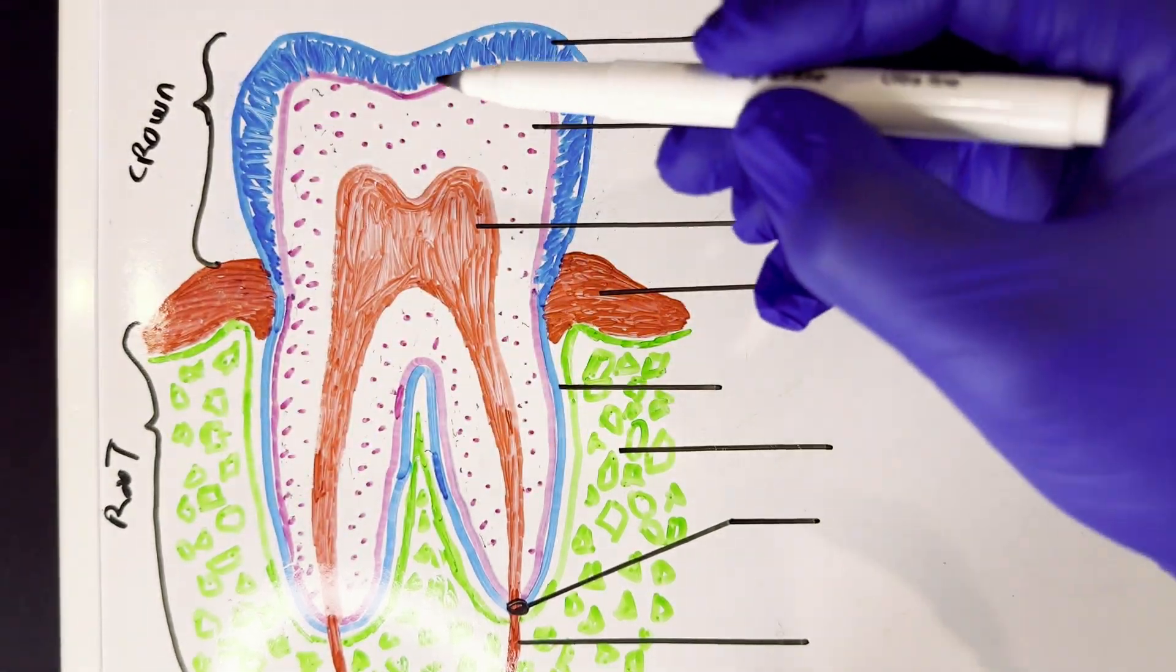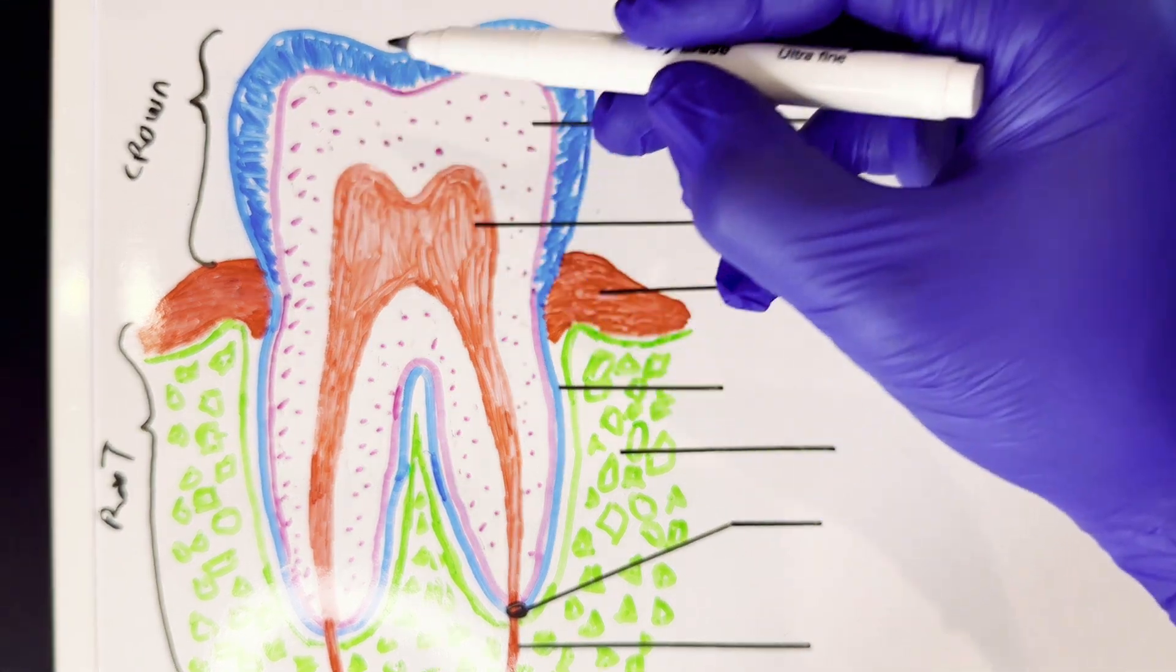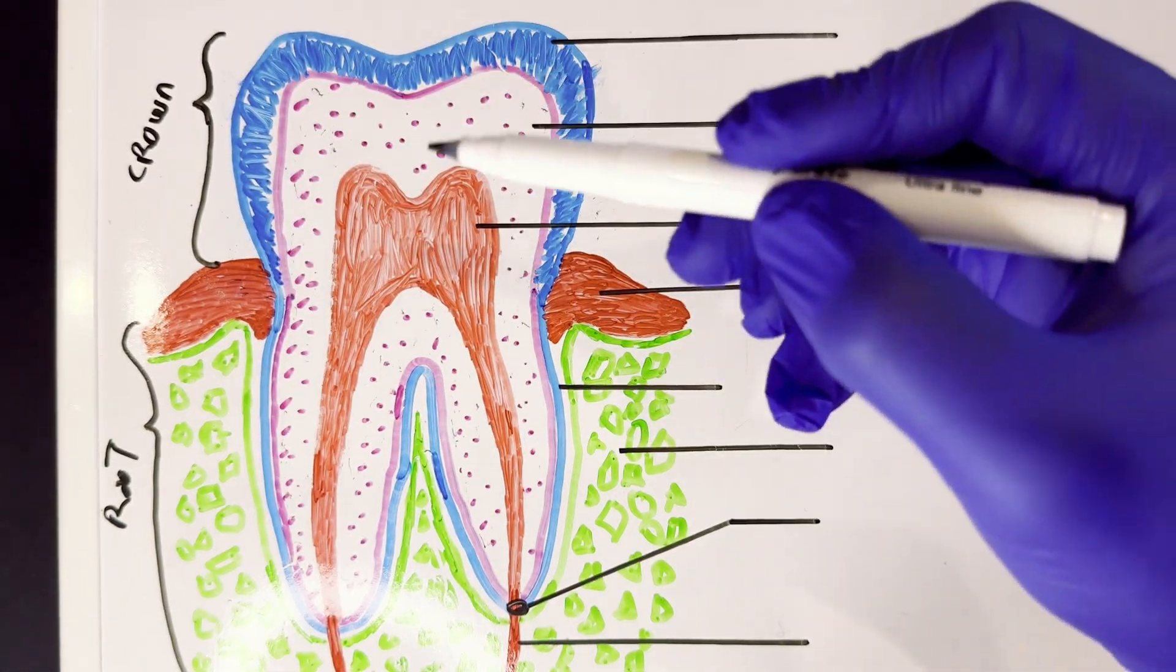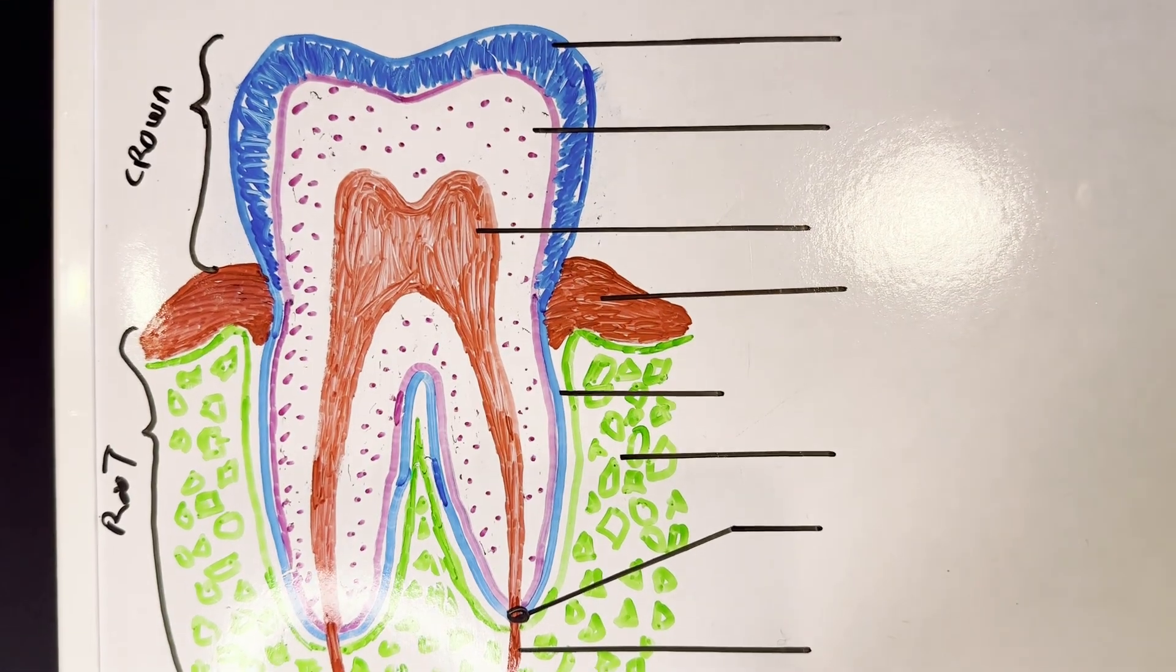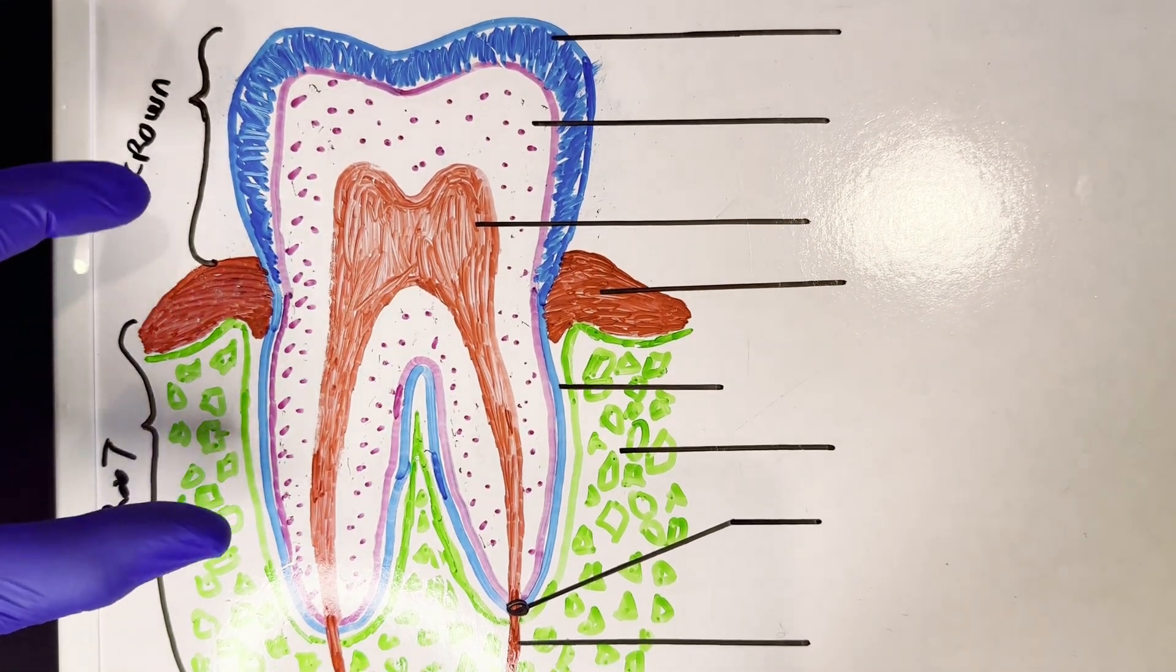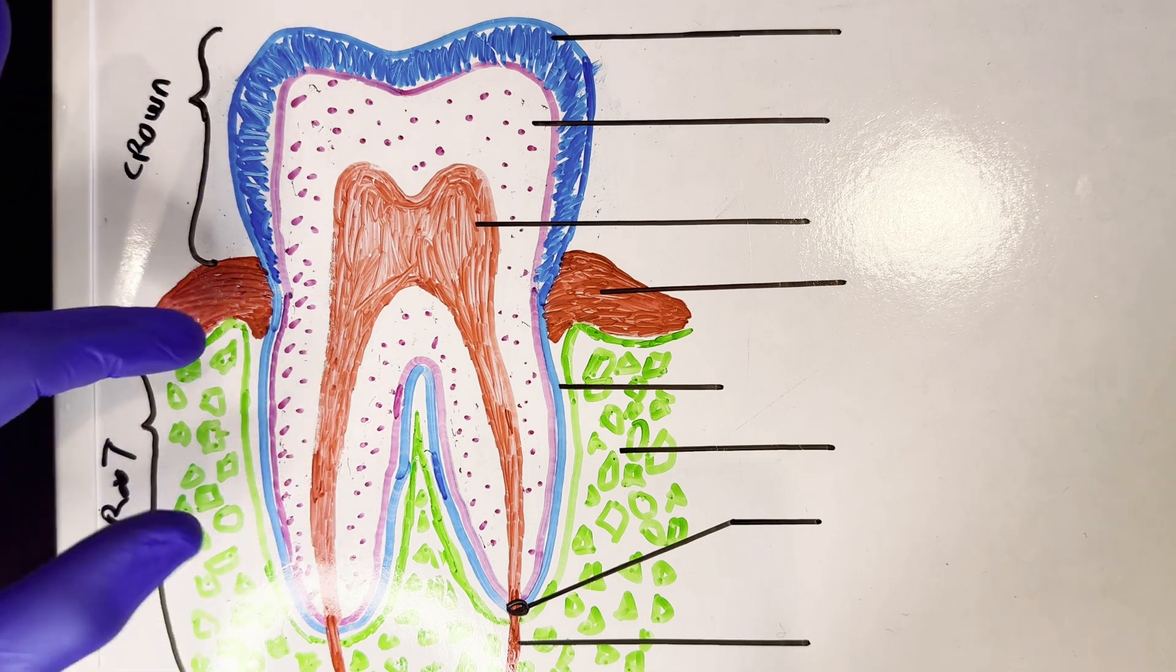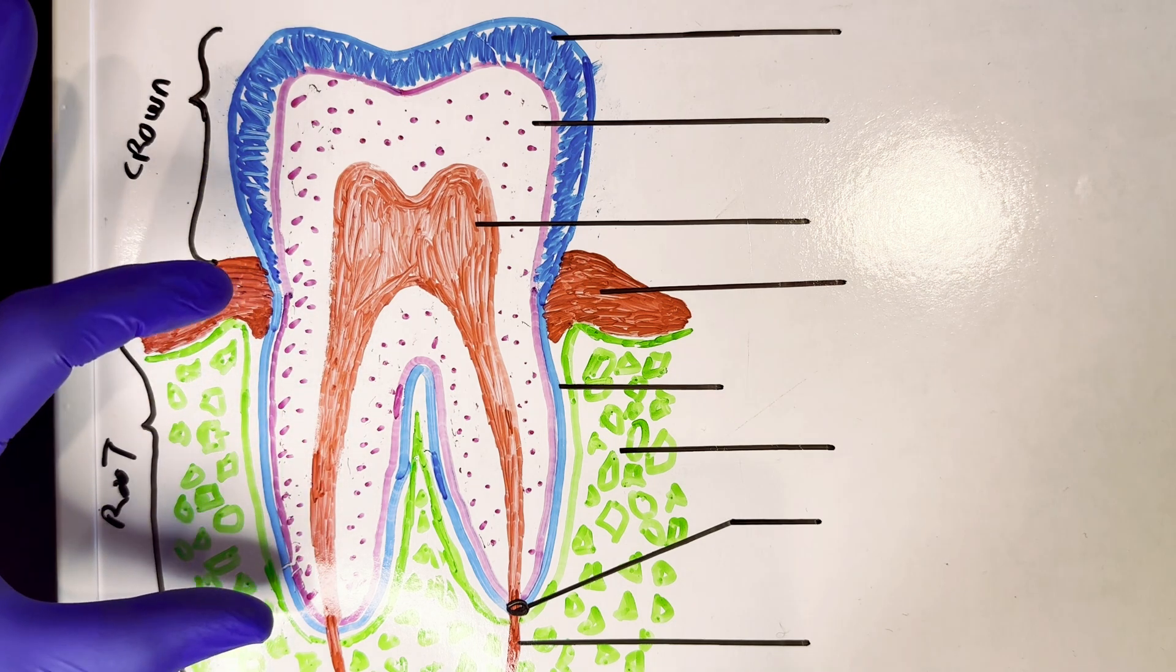So the part of the tooth that's visible in the mouth, the part that we use to chew our food with, is called the crown of the tooth. And the rest that we don't see in the mouth, that is covered by the gums and is embedded in the bone, this green part here is the bone, that is the root of the tooth.